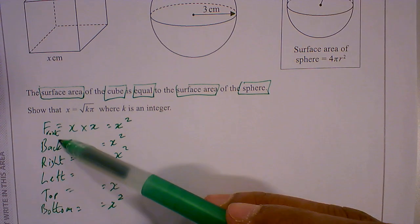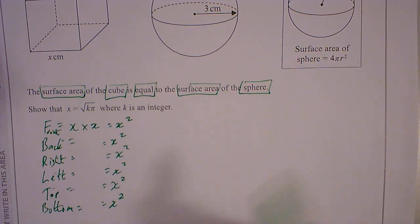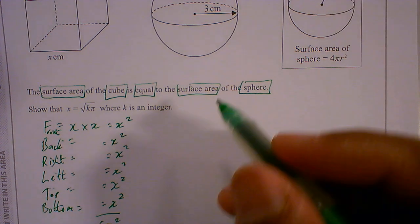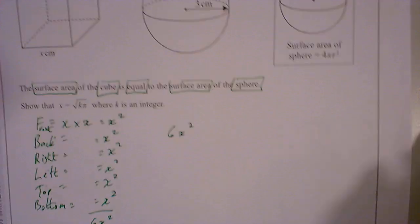So really we've got 1, 2, 3, 4, 5, 6. So if we add these together, this is 6x². Okay, so that's how we got that.